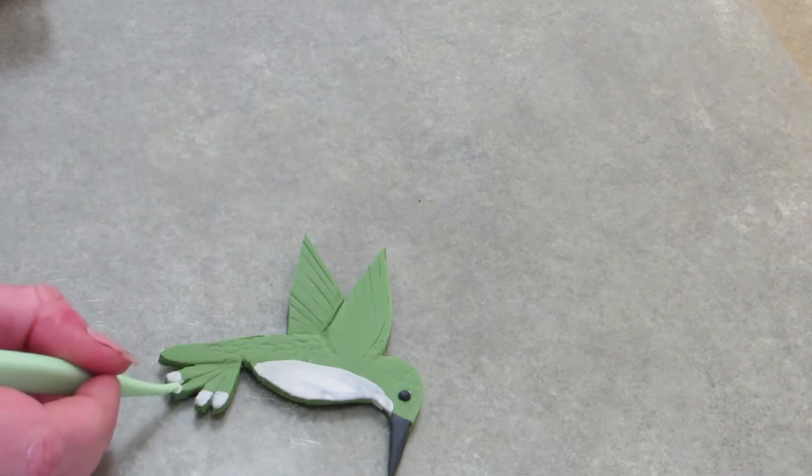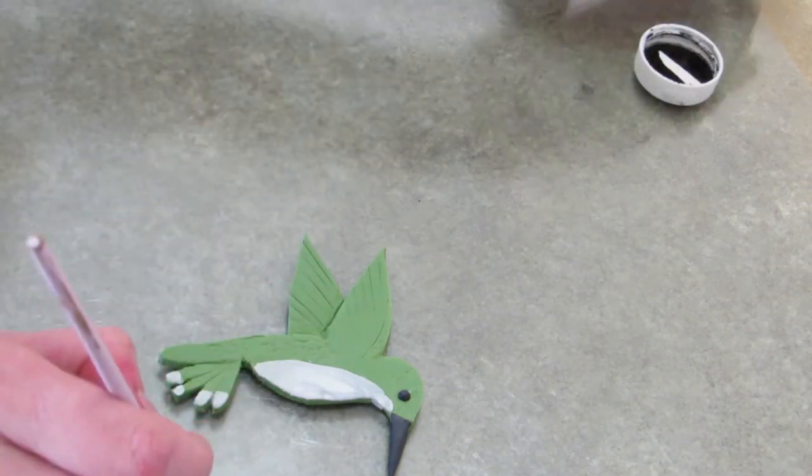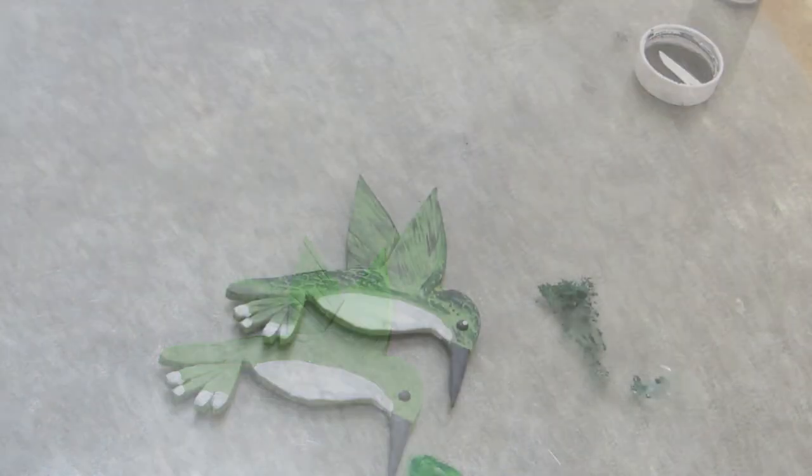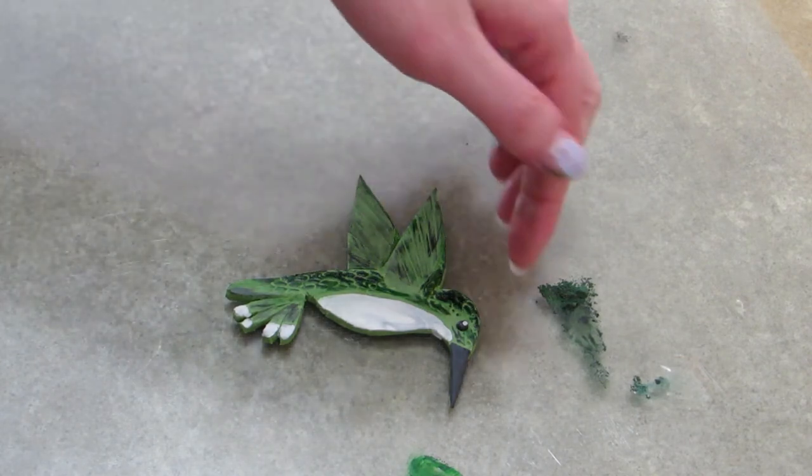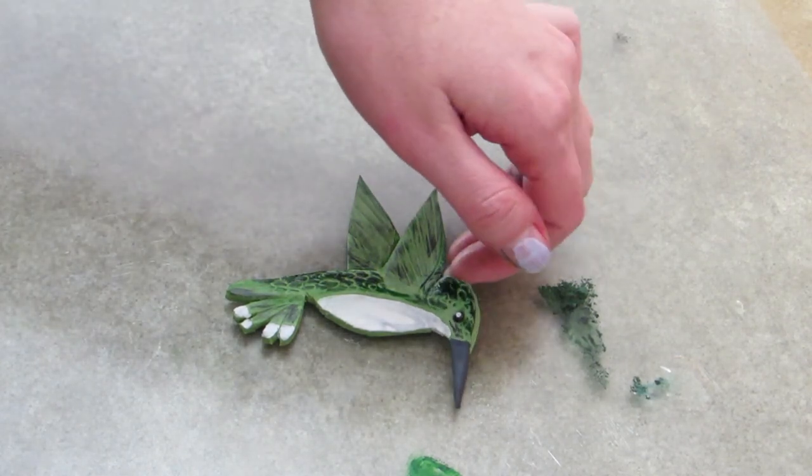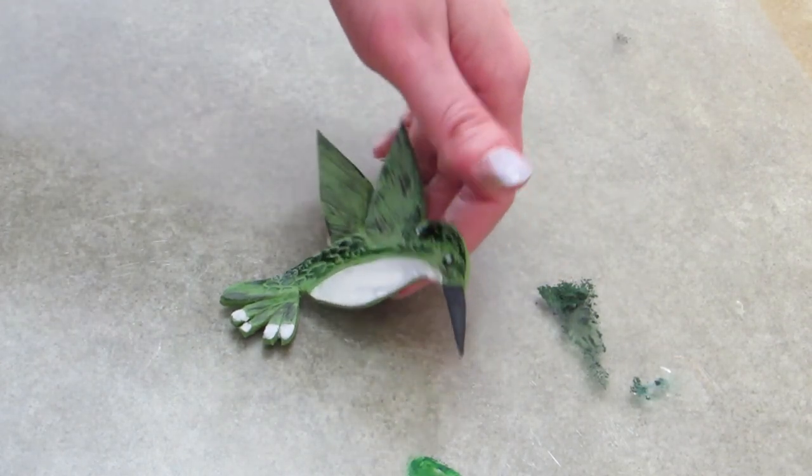Now I'm just adding little tips of white to the tail feathers. They don't have to be perfect because the hummingbird pictures I saw were pretty messy. And what I did here is I used different shades of green and just went over the feathers and outlined it in black with the wings and the tail and a little bit of shimmer. That's all you need.